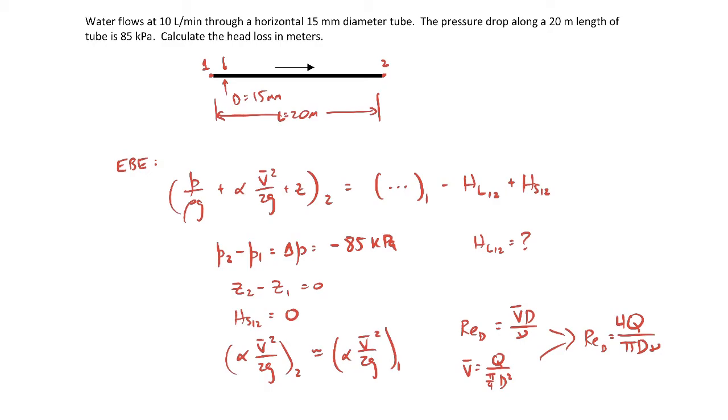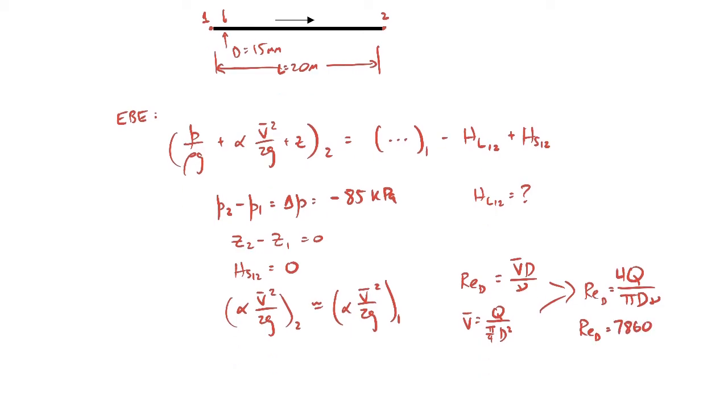If I plug in the values - I'm given the volumetric flow rate which I can convert to cubic meters per second, I know the diameter of the tube, I can look up the kinematic viscosity for water - the Reynolds number comes out to be about seven thousand eight hundred and sixty. That's larger than twenty-three hundred, which is the critical Reynolds number for turbulent flow. This means the flow is indeed turbulent, which means alpha two and alpha one are both about equal to one.